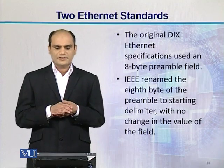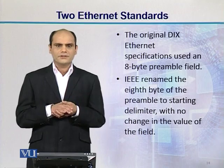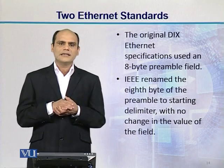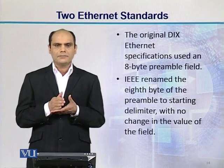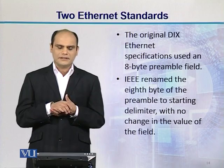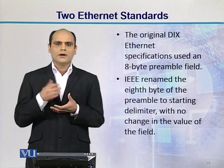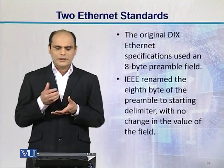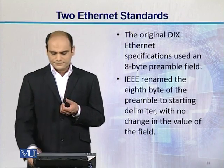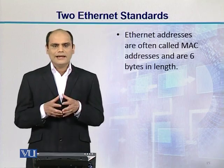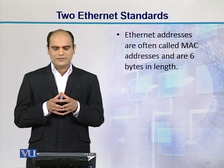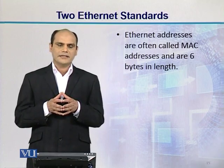The original DIX Ethernet specification used an 8-byte preamble field. What IEEE did was rename the 8th byte of the preamble as the 'Starting Delimiter,' with no change in the value of the field. Ethernet addresses are often called MAC addresses and are 6 bytes in length.